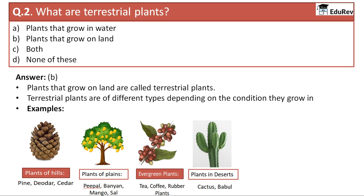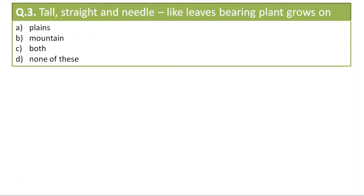So plants in deserts are also terrestrial plants. Hence the correct answer is option B. Let's continue with the third question: tall, straight, and needle-like leaves bearing plant grows on — option A: plains, option B: mountains, option C: both of them, option D: none of these. The correct answer is mountains.